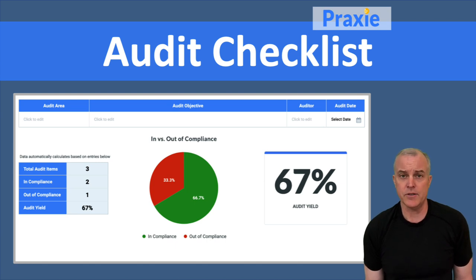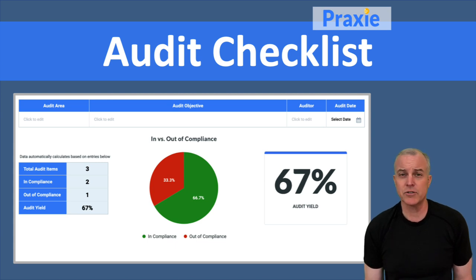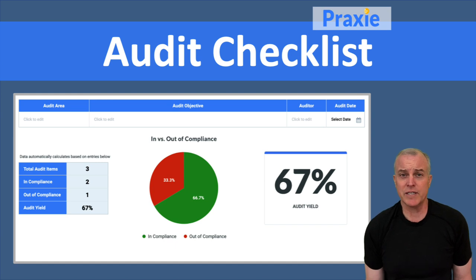Either way, you can list off the different items you want to audit, look at how you're going to audit those — as an observation or a measurement — and then look at the result of that.